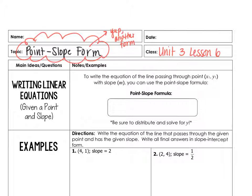Hey guys, welcome to Unit 3, Lesson 6, where we're going to be talking about point-slope form — another way to write equations of lines.